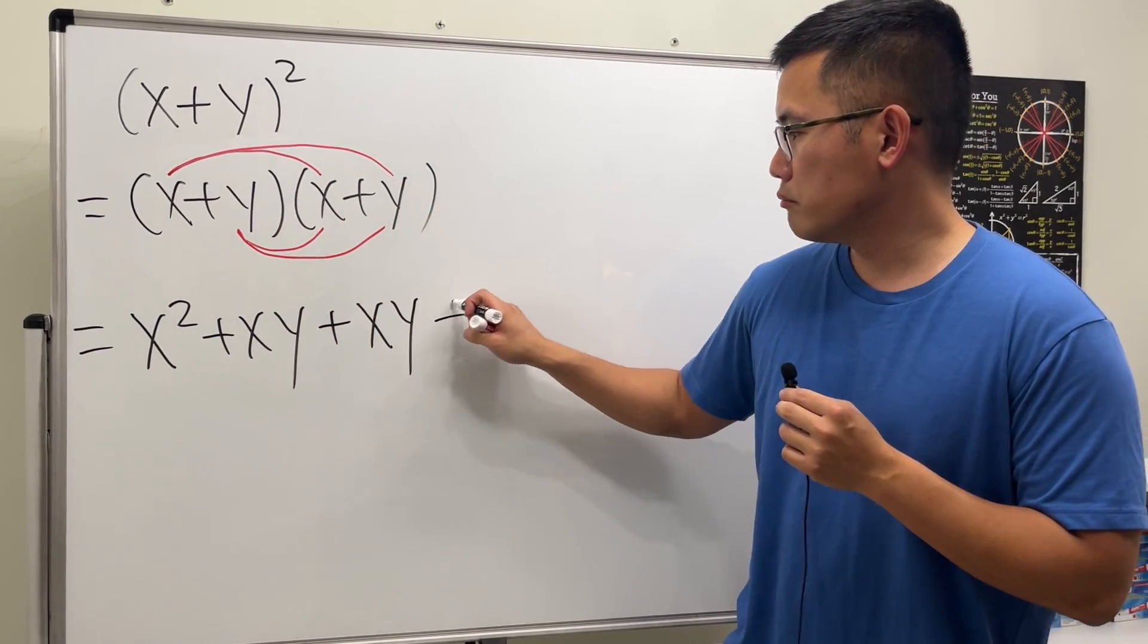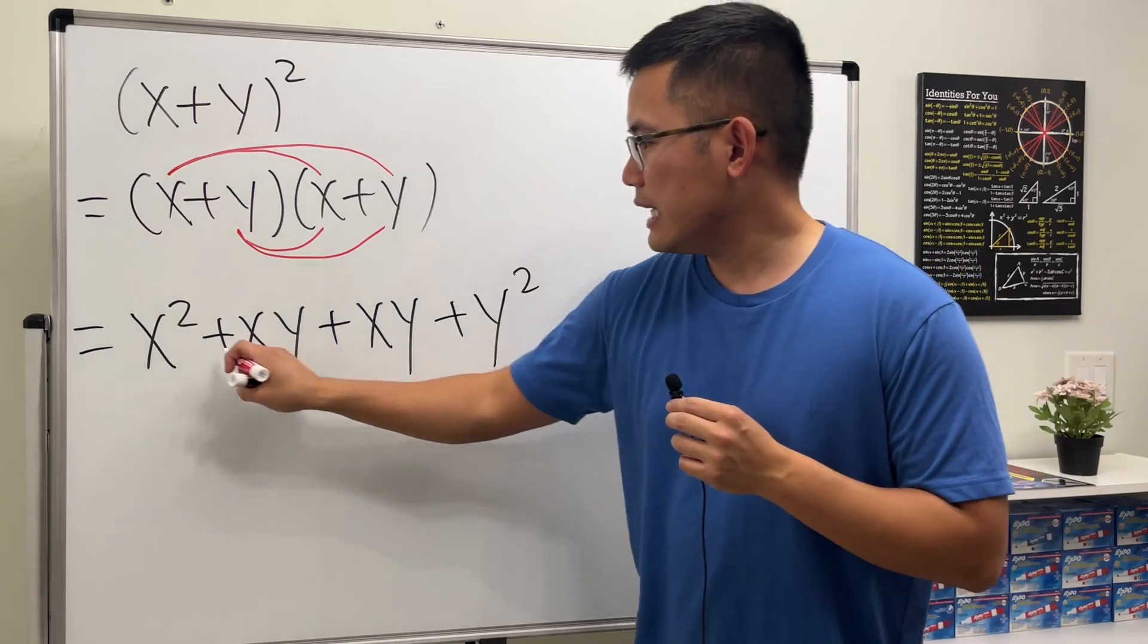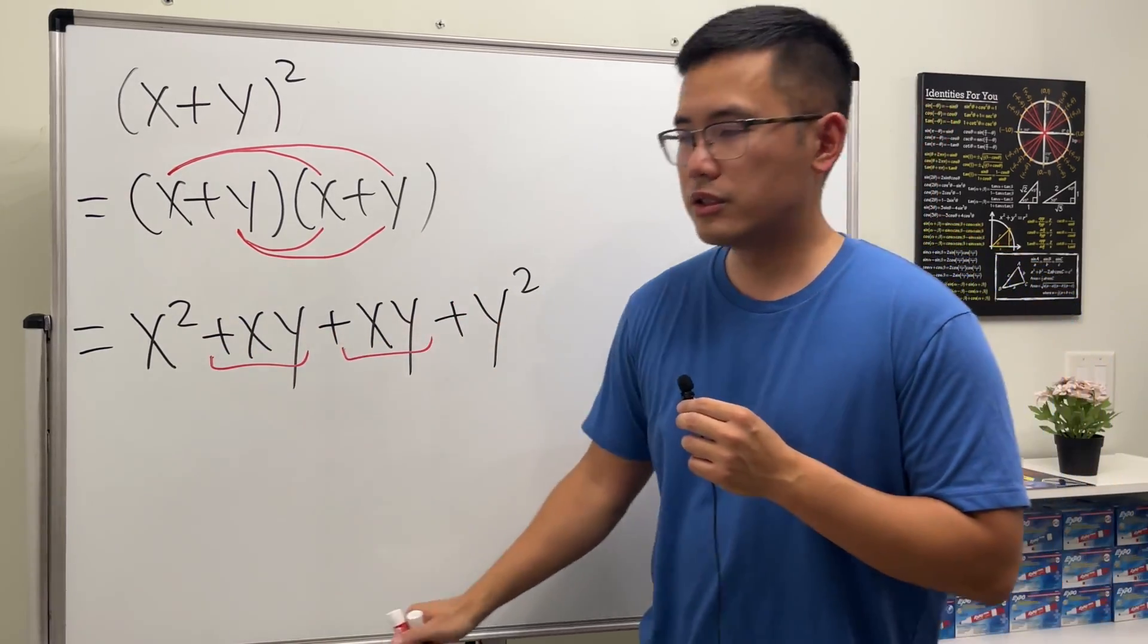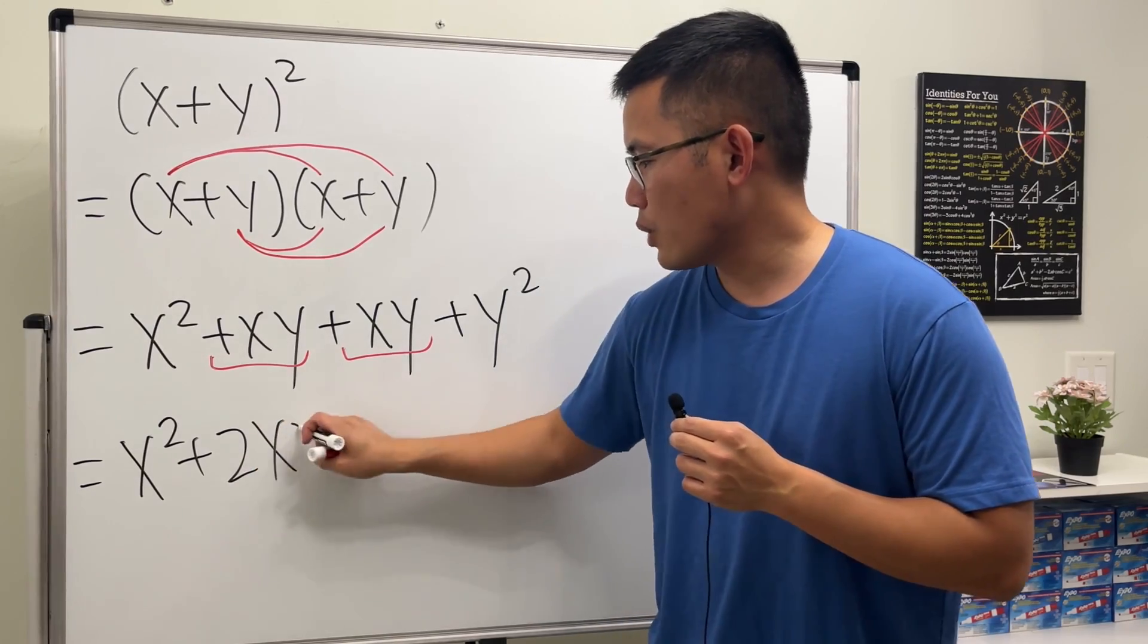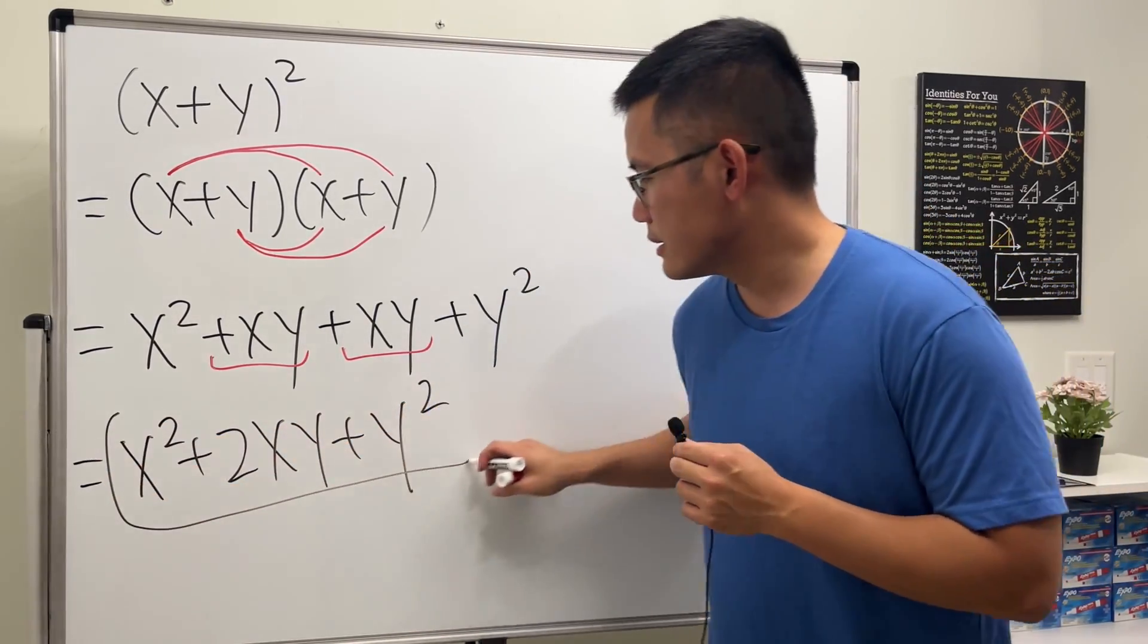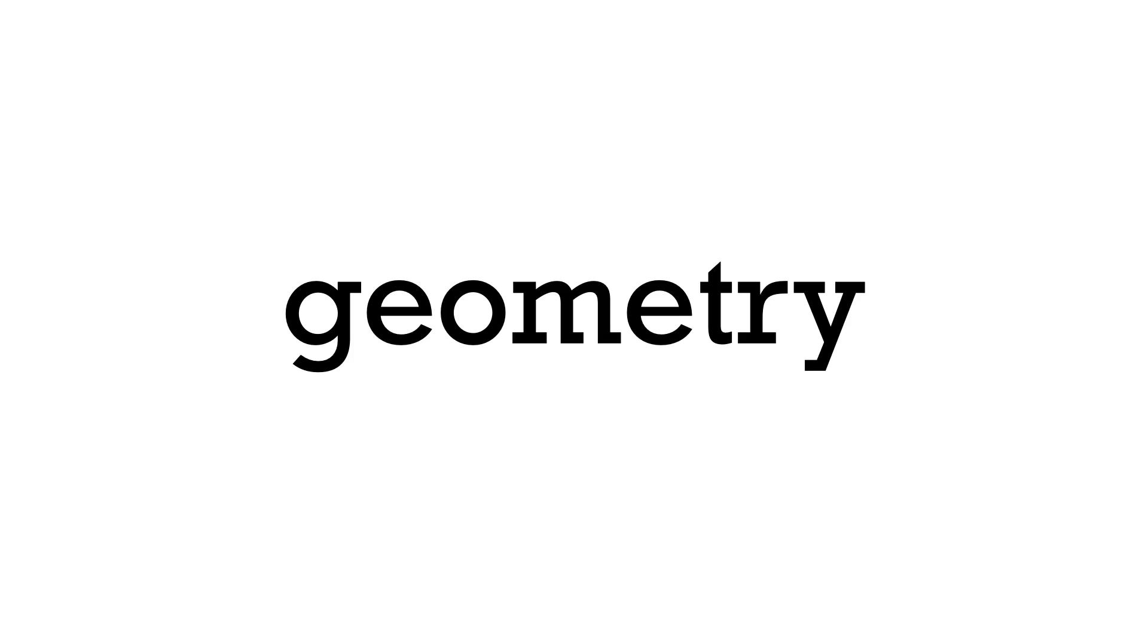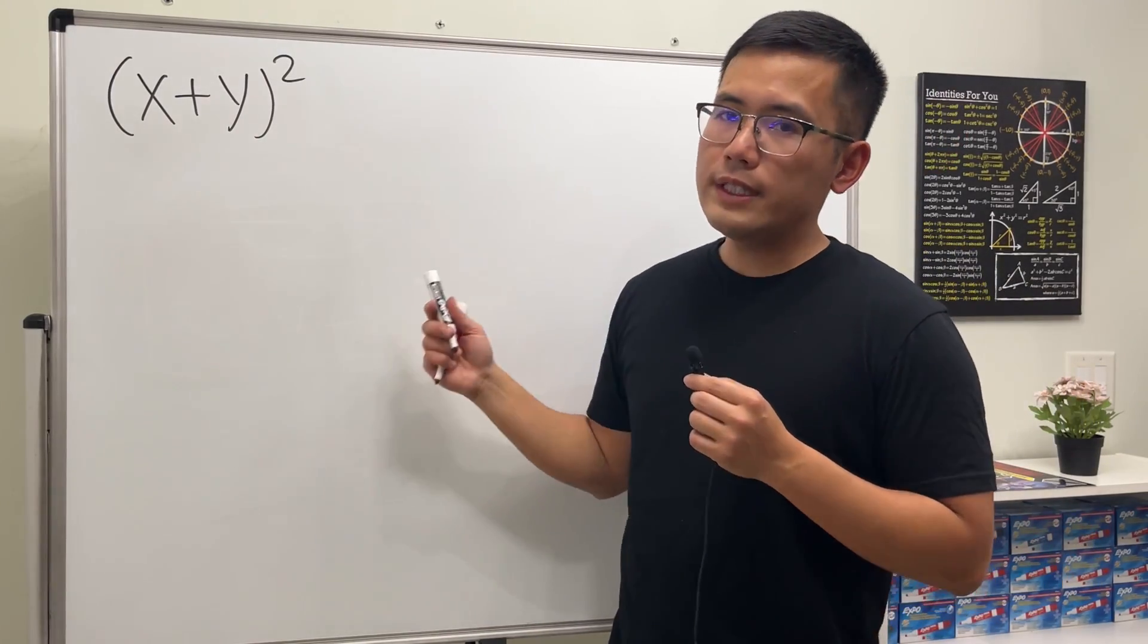And last times last: y times y is y square. And then we see that this and that can be combined, so the answer is x square plus 2xy plus y square. Done.